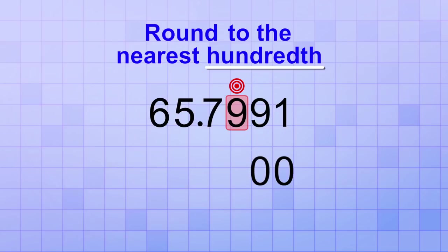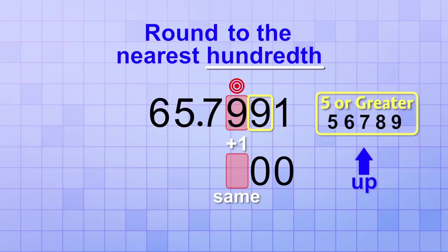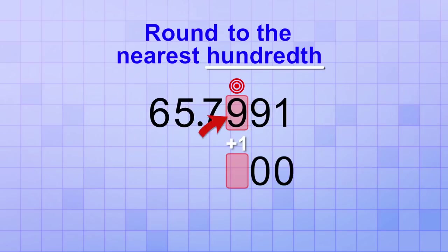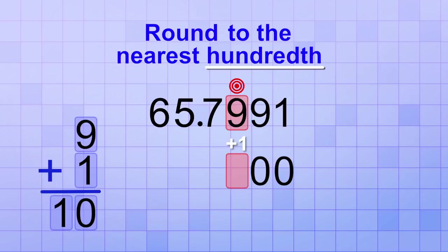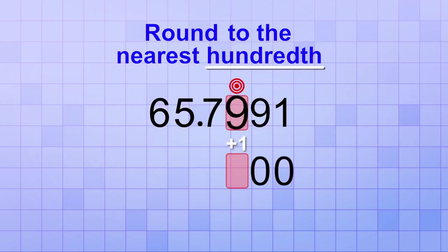Next, we need to decide if we leave the target digit the same or increase it by 1. So we look at the digit to the right of the target. It's a 9 also, so we'll definitely be rounding up. But since the target digit is already a 9, raising it by 1 is a little more complicated. When you add 1 to a digit that's already 9, you need to change it to 0 and increase the digit in the next bigger number place by 1. So that means that our target digit will become 0 and we need to increase the digit in the next bigger number place. That digit is a 7, so we'll increase it to an 8.